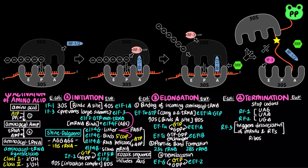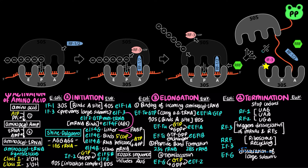During ribosome recycling, the large subunit of the ribosome dissociates from the small subunit. Ribosome recycling factor (RRF), along with initiation factor 3 and GTP-bound elongation factor G, facilitates the dissociation of the 50S from the 30S subunit and mRNA. The initiation factor 3–30S complex is then ready to begin another cycle of translation.